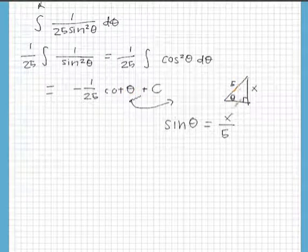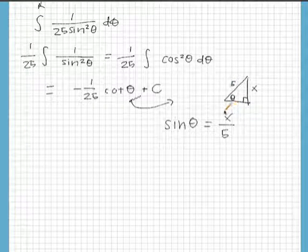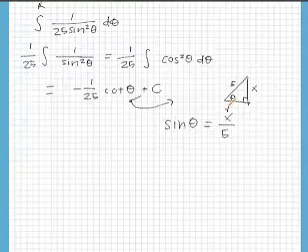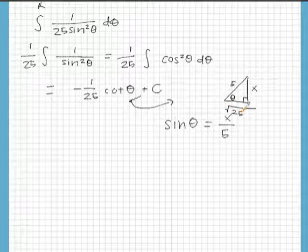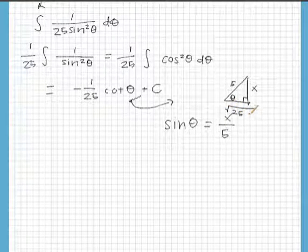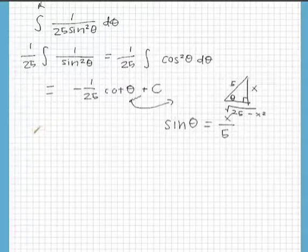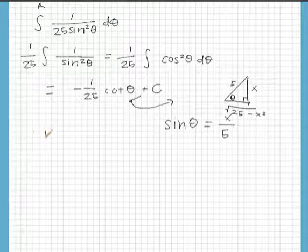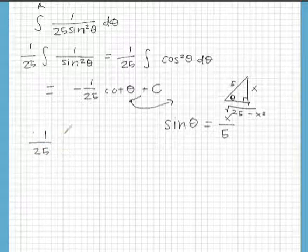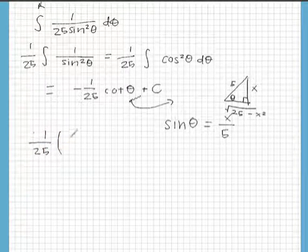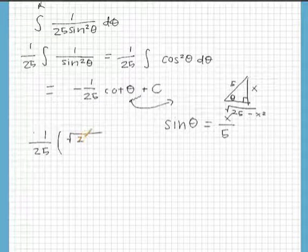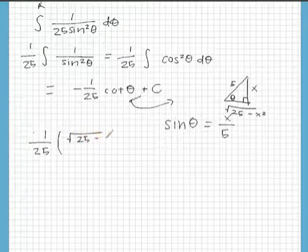So we have to find this other side which ends up being radical 25 minus x squared. So cotangent is just adjacent over opposite, so we end up having 1 over 25 times radical 25 minus x squared all over x plus C.